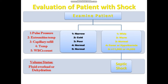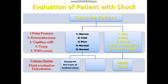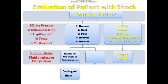To differentiate the two, we listen to the lungs for crackles, check for S3, JVD, and peripheral edema. If these signs of fluid overload are present, it is cardiogenic shock. If they are absent — no elevated JVD, no crackles, no S3, no peripheral edema — but there are signs of dehydration like dry mucous membranes, it is hypovolemic shock.